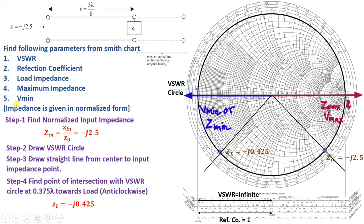At the Vmin location, we have the coordinate for Vmin. Maximum impedance, or the Vmax point, occurs on the right side of the VSWR circle on the real axis. That is how we identify the locations of maximum impedance and Vmin on the Smith Chart.